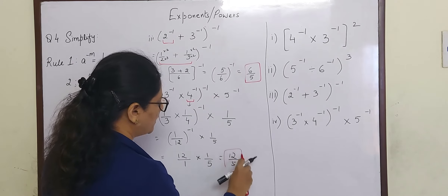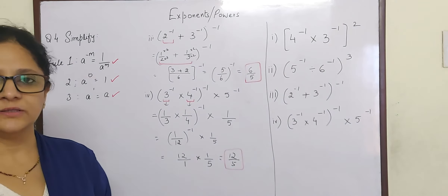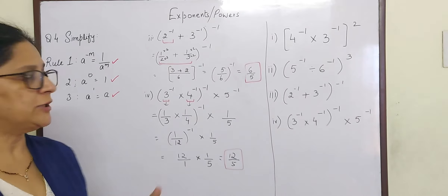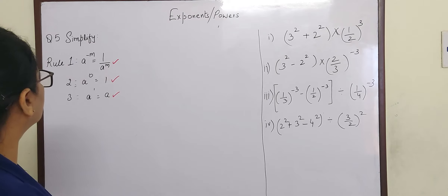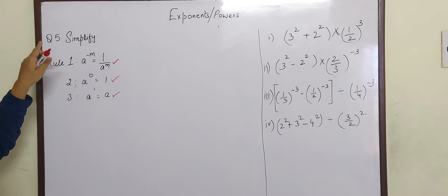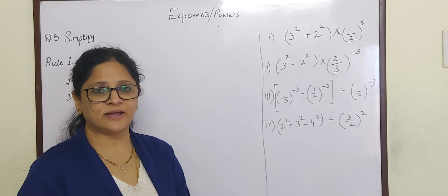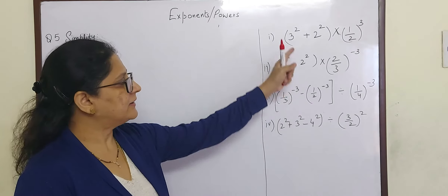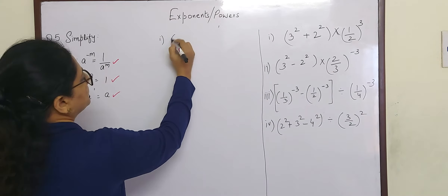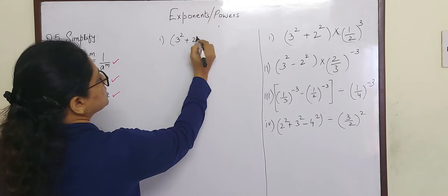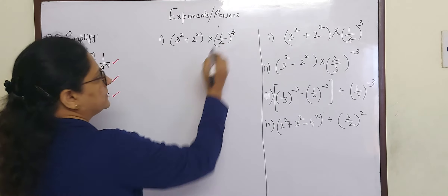Hope you understood the problems. By this time you would have known all the rules. Now let us continue with question number 5. We are going to the next question — question 5, simplified — and I have written the questions here. So let us go to the first sum: 3 square plus 2 square into 1 by 2 raised to 3.